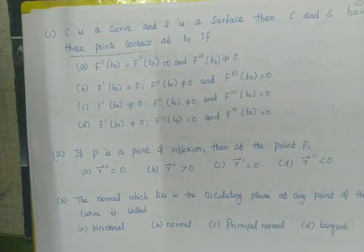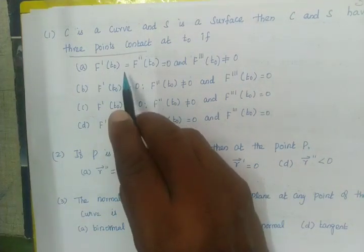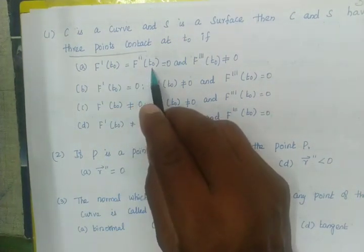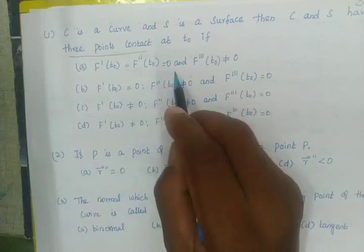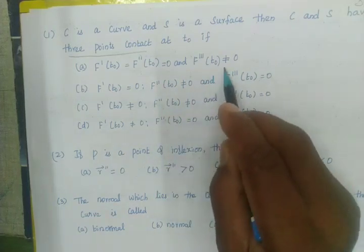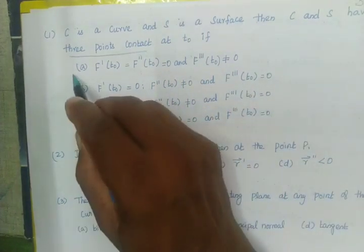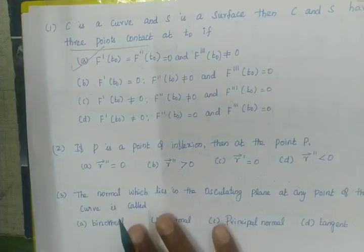The null option is correct. F dash of T0 equal to F double dash of T0 equal to 0, and F triple dash of T0 not equal to 0. This is the right option to this given problem.